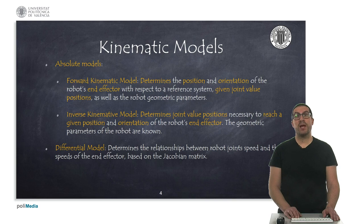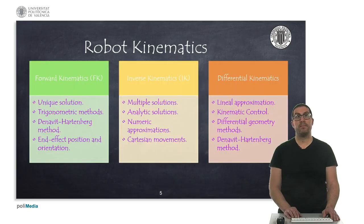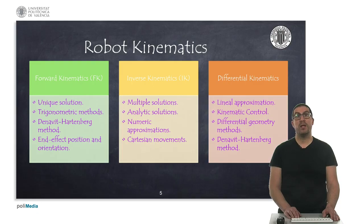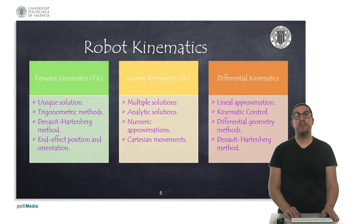Each of these models can have different methods in order to compute them and therefore it is convenient to know all of them. Forward kinematics has a unique solution and can be obtained from trigonometric equations or from the Denavit-Hartenberg method. The details of this method are explained in specific videos about robot kinematics. Forward kinematics plays a fundamental role to obtain the position and orientation of the robot end effector, given some joint values.